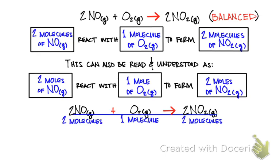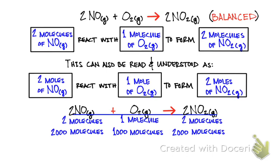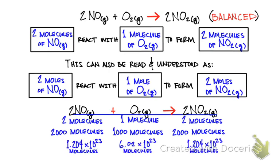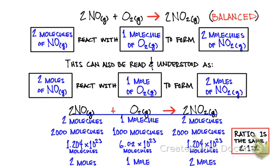Here you can see that the ratio between the molecules based on their coefficients is two to one to two — two molecules of NO per one molecule of O2 per two molecules of NO2. We can also use this ratio with two thousand molecules of NO per one thousand molecules of O2 per two thousand molecules of NO2. We can go even further and use Avogadro's number, because in reality chemical reactions involve billions of atoms and molecules. We can simplify this by using moles as the unit — the ratio remains two to one to two, and this works as long as the ratio remains constant.